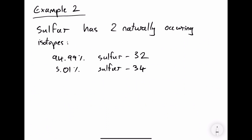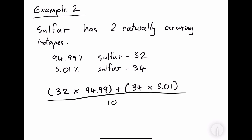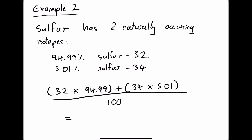Let's look at another example of calculating relative atomic mass. Sulfur has two naturally occurring isotopes: 94.99% sulfur-32 and 5.01% sulfur-34. We take the mass number of the first isotope and multiply it by its percentage abundance, add the mass number of the second isotope multiplied by its percentage abundance, then divide the whole thing by 100. This gives us an answer of 32.10 to 2 decimal places.